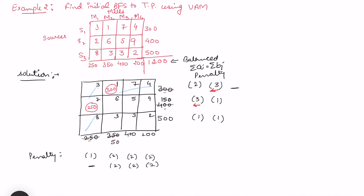In the updated table, the second row penalties: least and next least are 5 and 6, giving a difference of 1. The third row: 2 and 3 gives 1. For columns, the difference of 3 and 6 is 3, and 3 and 5 is 2. The last column gives 2 and 9, which is 7. We always compare row and column penalties together. The highest penalty is now 7, and the least cost in that column is 2, so we allocate there.